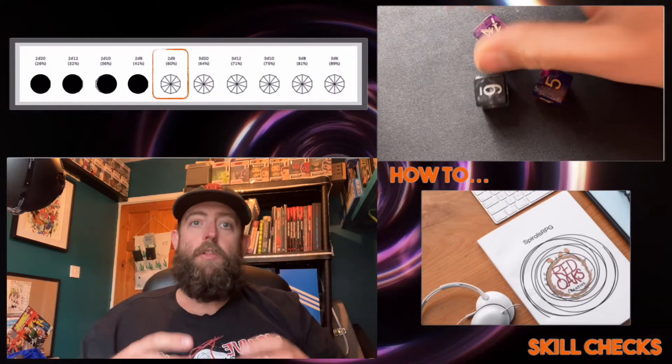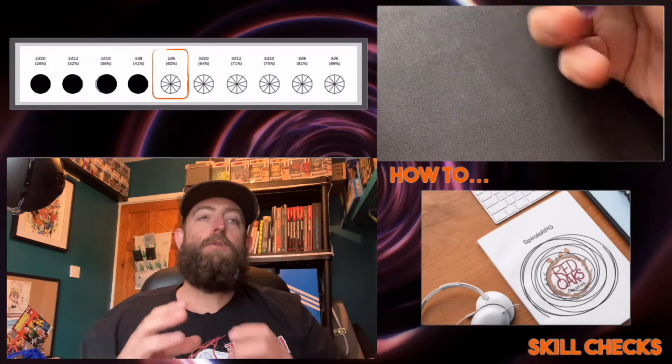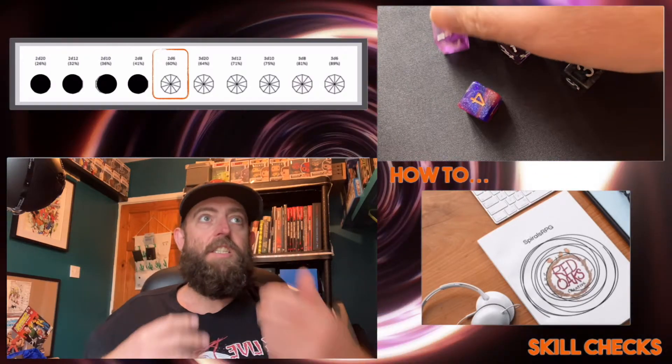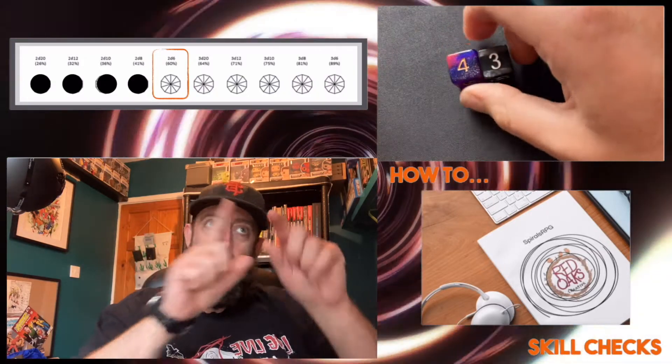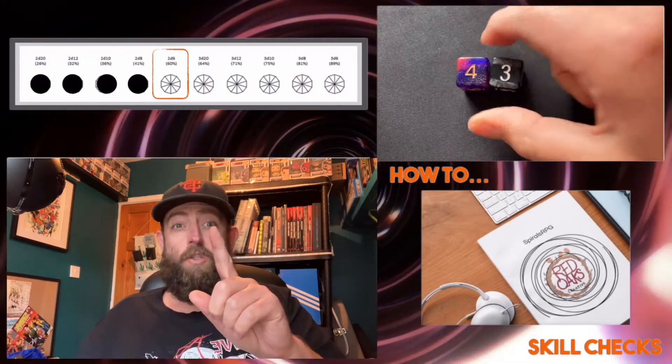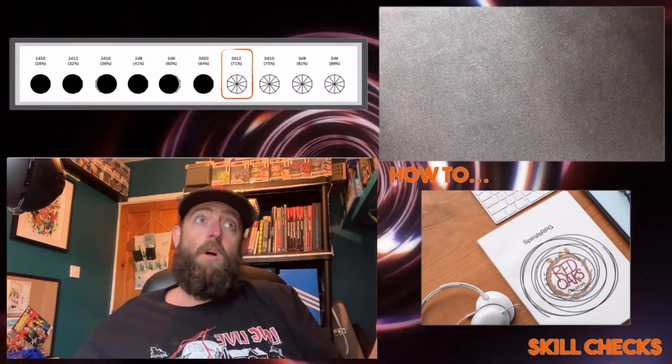As we improve even further and start rolling dice pools of d6, this is where we start to see success more often. Here, I've got multiple ways of making a 7, but I can only make one 7. That's one success. Hopefully I've achieved what I wanted to do.